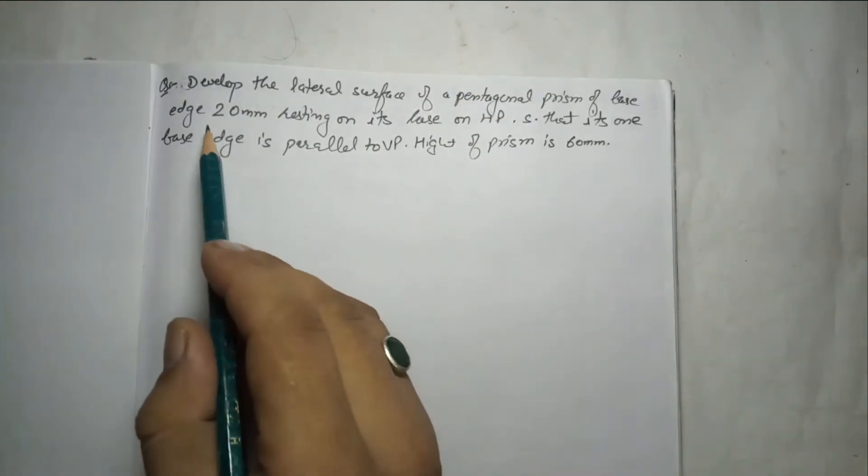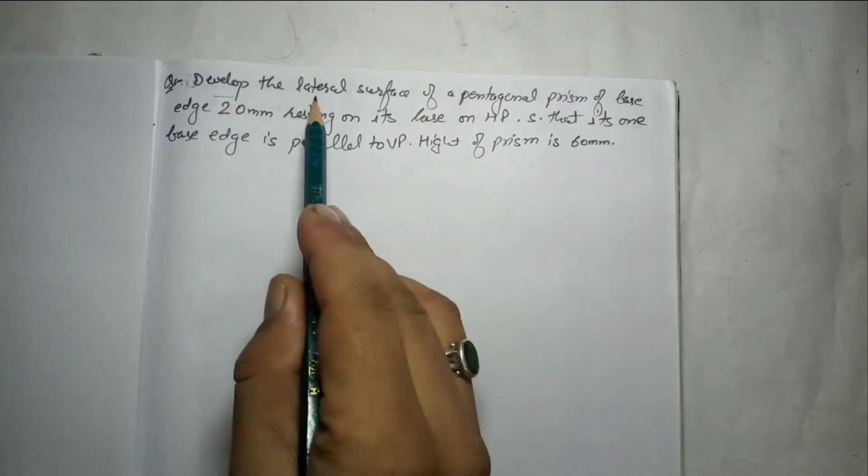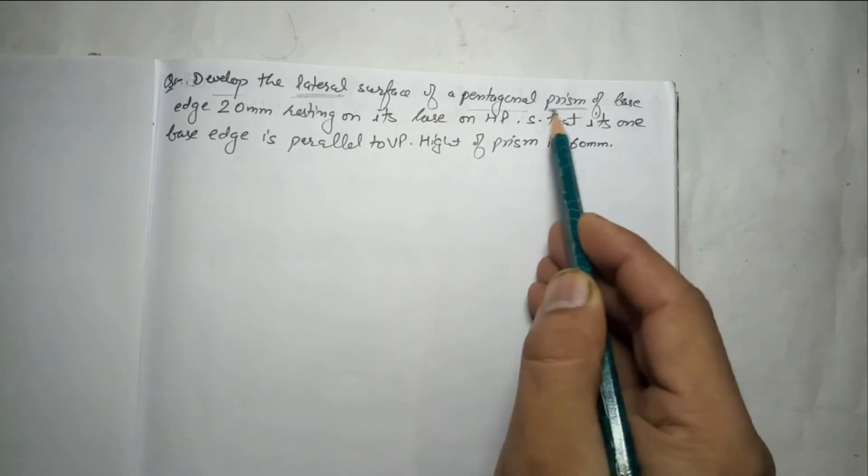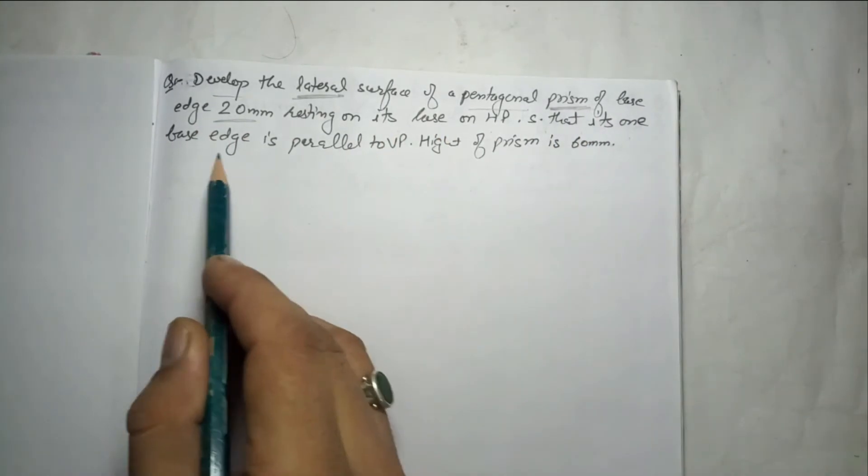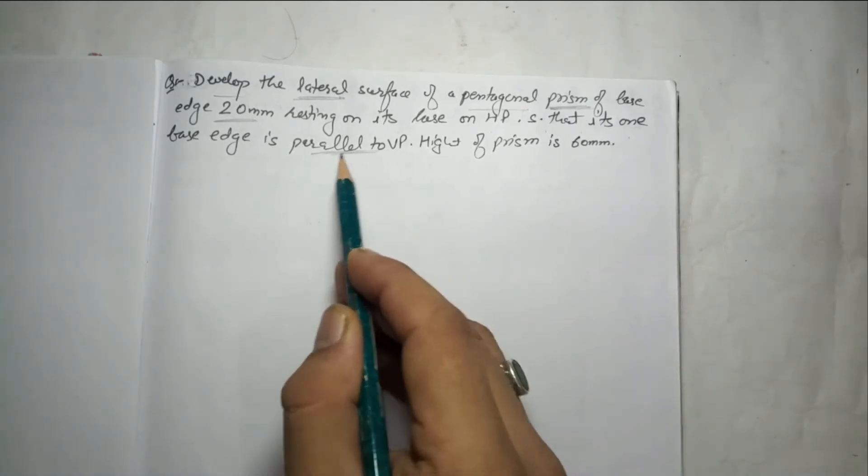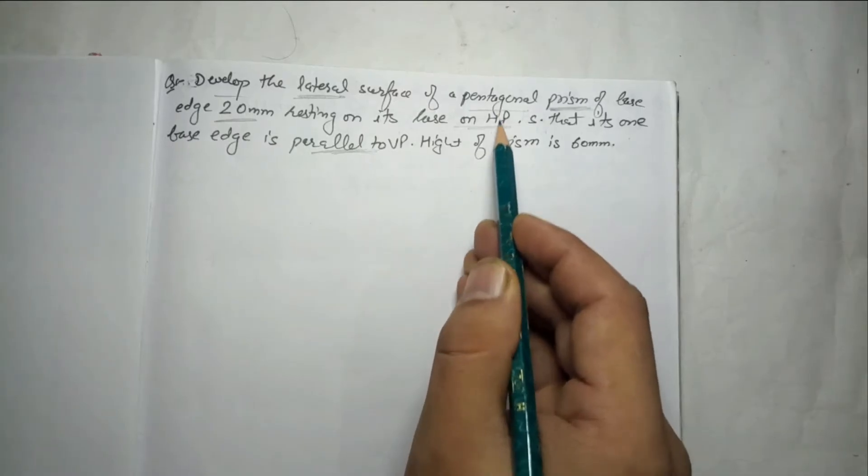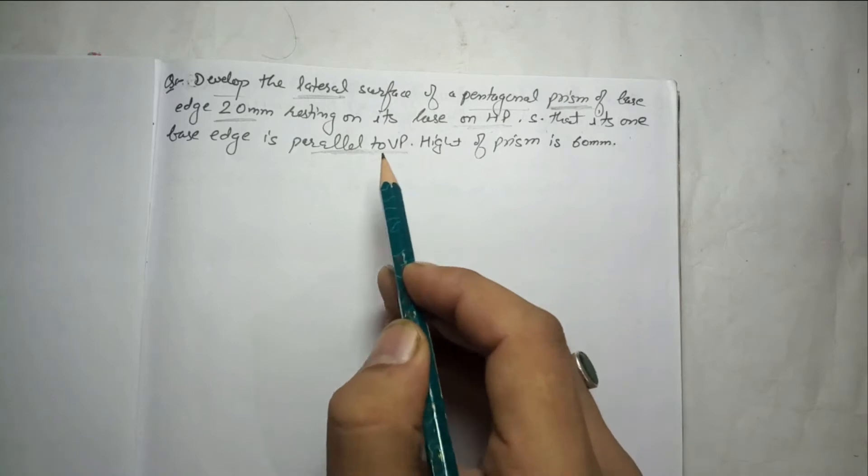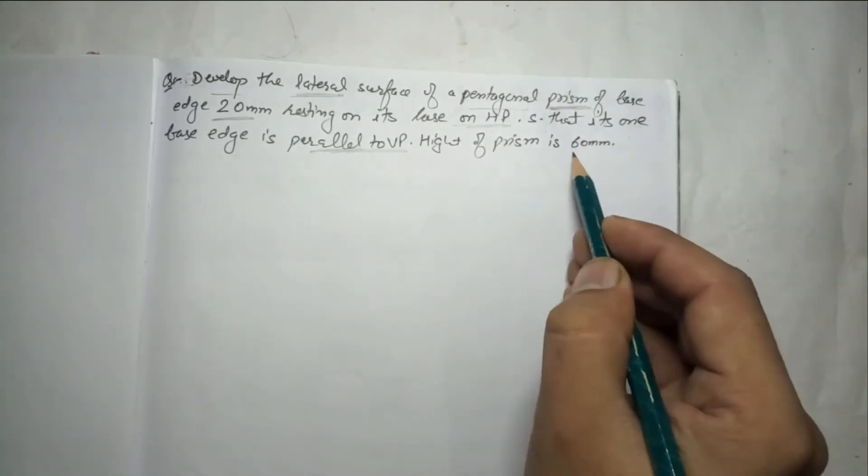Hello everyone, let's solve one more question from the development of surface chapter. The question says develop the lateral surface of a pentagonal prism. Base edge is given 20mm, resting on its base on HP such that one base edge is parallel to VP, and height is given 60mm. Let's solve this question.